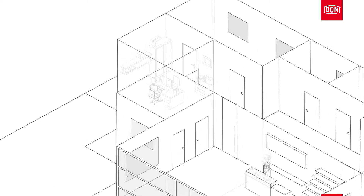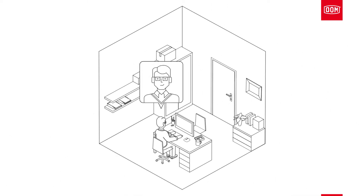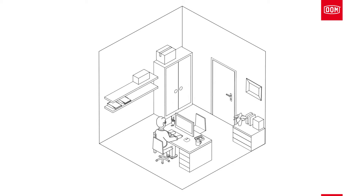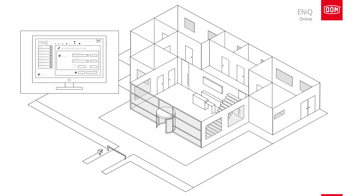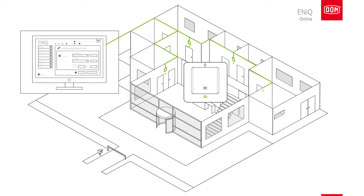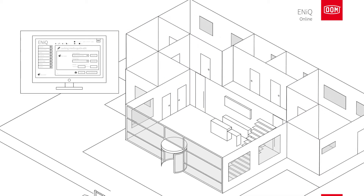This is Fred, the facility manager. He's responsible for all access and security processes at this office. He uses the Annex access management software — an online programming method — to program and manage all the locking devices in the building. Online means all access information is transferred directly from the software into every locking device, where the data is also stored. This happens through a TCP/IP network and wireless connection via Annex RF net managers.